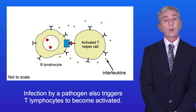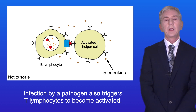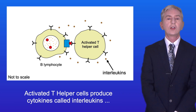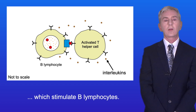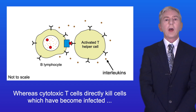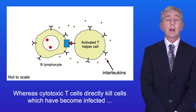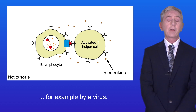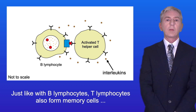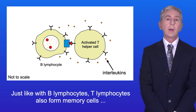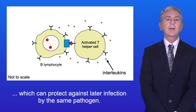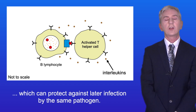Infection by a pathogen also triggers T lymphocytes to become activated. Activated T helper cells produce cytokines called interleukins, which stimulate B lymphocytes, whereas cytotoxic T cells directly kill cells which have become infected, for example by a virus. And just like with B lymphocytes, T lymphocytes also form memory cells, which can protect against later infection by the same pathogen.